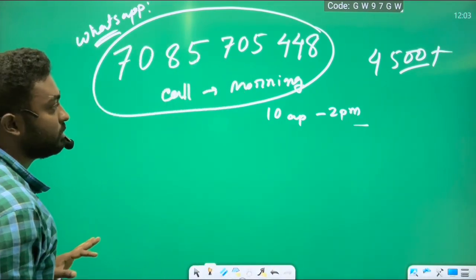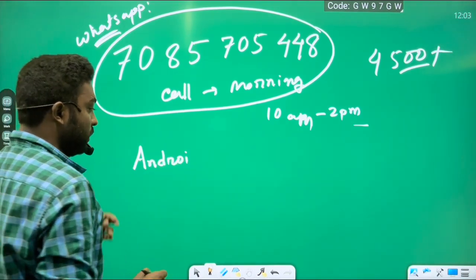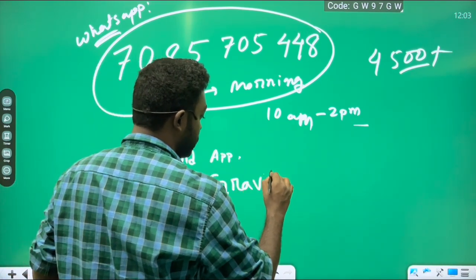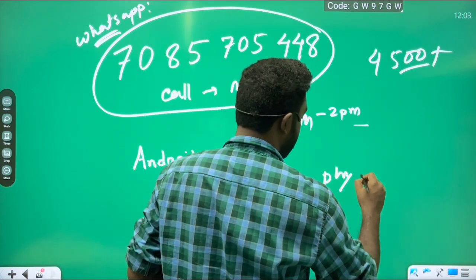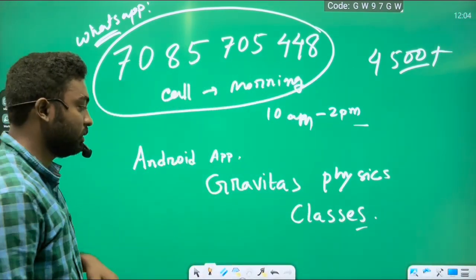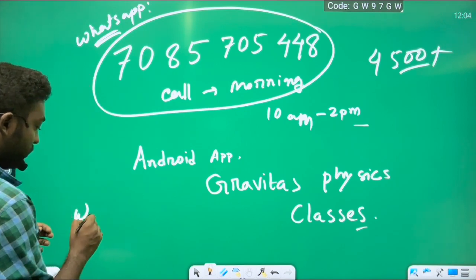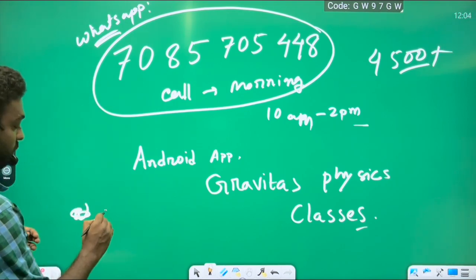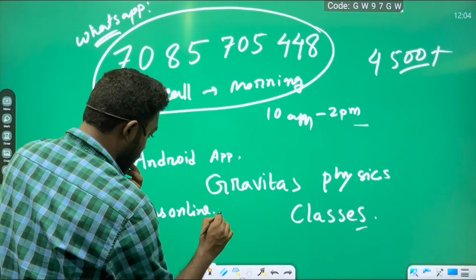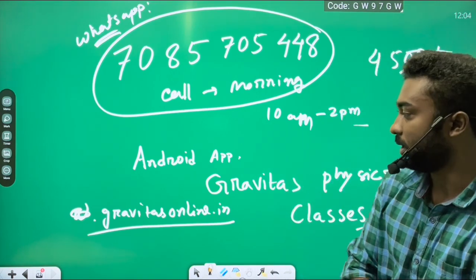You can also download our Android app and you can submit your query there. Search as Gravitas Physics Classes. You will get the app and download it and log in there. And you can also visit, if you do not have mobile phone, you can also visit Gravitasonline.in, our website. Gravitasonline.in. That's it. Hopefully, stay healthy and study hard. Bye bye.